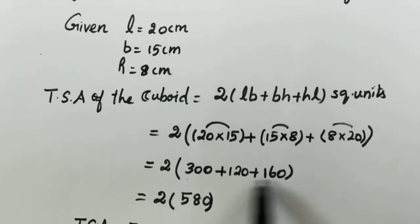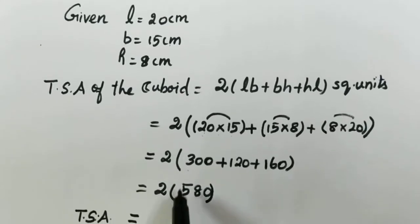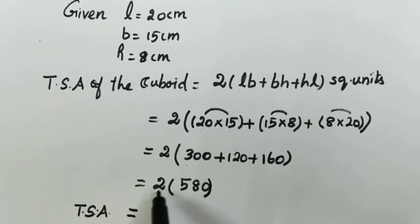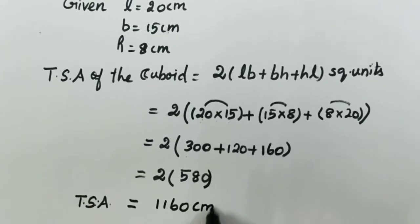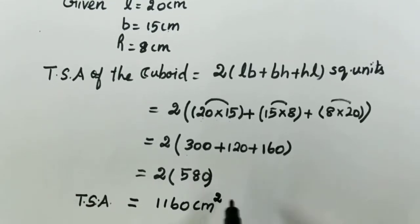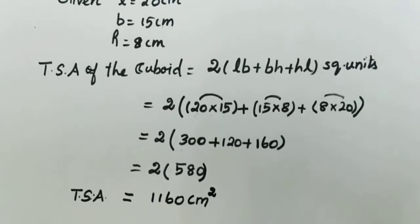plus 15 into 8 is 120, plus 8 into 20 is 160. Next, bracket values add: 580. 580 multiply and the answer is 1160 centimeter square. So total surface area calculated.